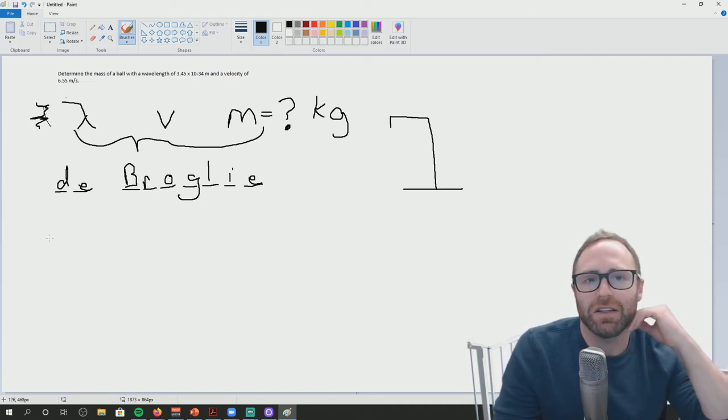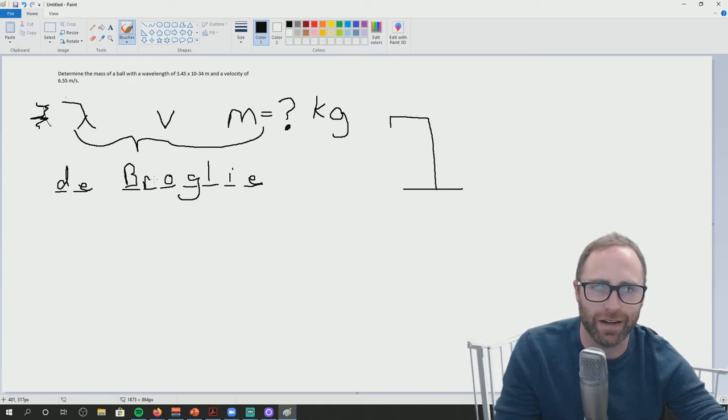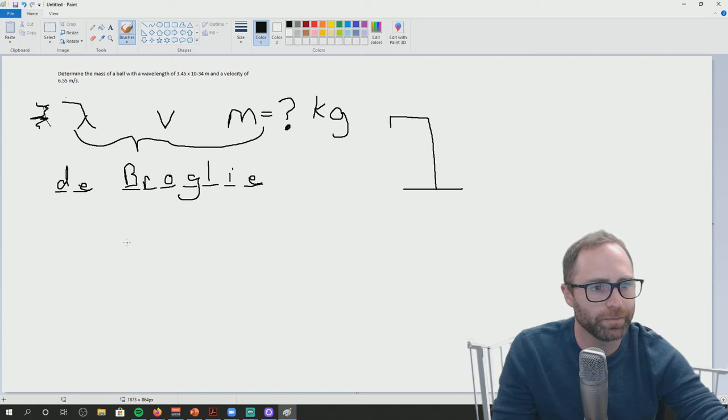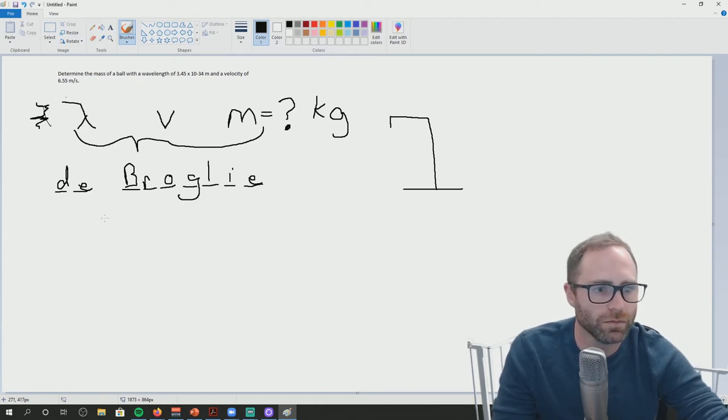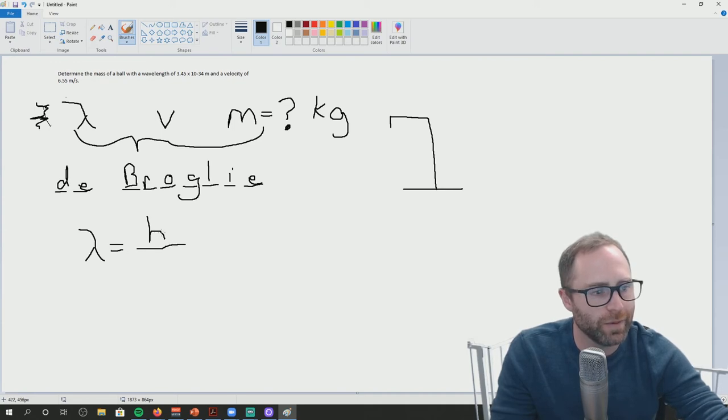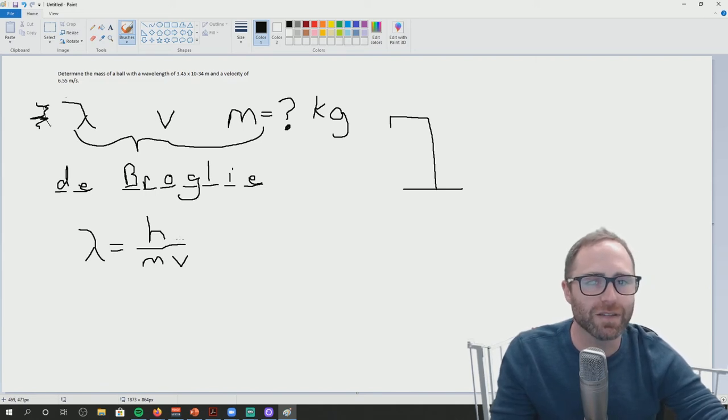So De Broglie is going to be the wavelength of particles. And our baseball is not, or a ball isn't really a particle, but we're treating it like it's a one single particle for the sake of this question. So what is our De Broglie wavelength equation? The lambda thing equals H over MV. That's right. So lambda equals Planck's constant over M. And then, so this is where I think your book has it written out as V. I talked about it in the video as C, as in speed of light, but really it's just the speed of the particle itself.